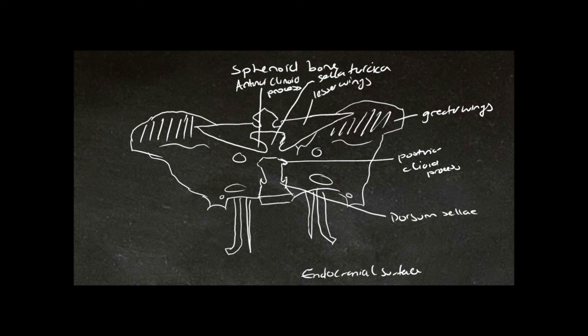Just underneath the lesser wing of the sphenoid we can see foramen rotundum, which we could not see on the ectocranial or anterior surface of the sphenoid bone. We can also see our other two foramina, foramen ovale and foramen spinosum.